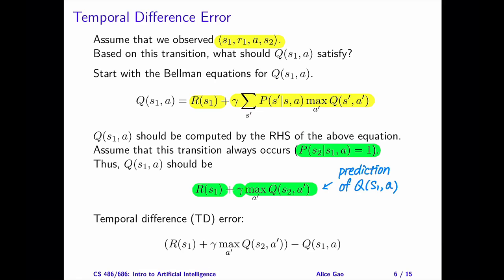This expression we just wrote down is our prediction of the Q(S1, A) value, based on the observed transition. If we take our prediction and subtract the current value of Q(S1, A), this difference is called the temporal difference error, or the TD error. The key idea in temporal difference learning is to update the Q values proportional to the temporal difference error.